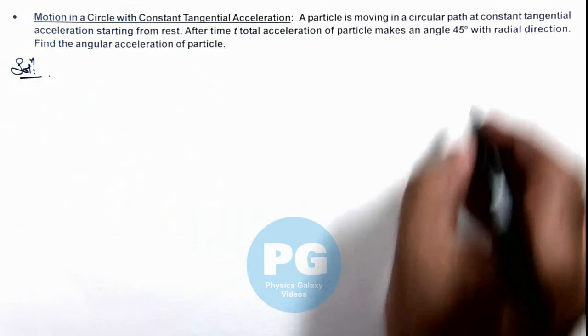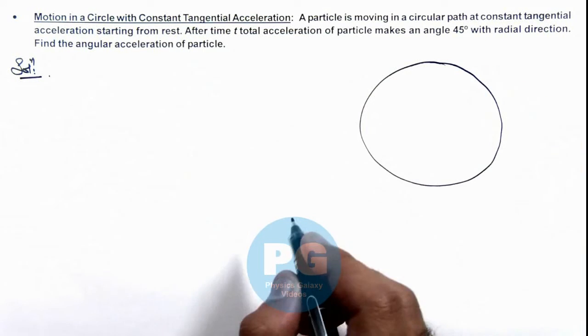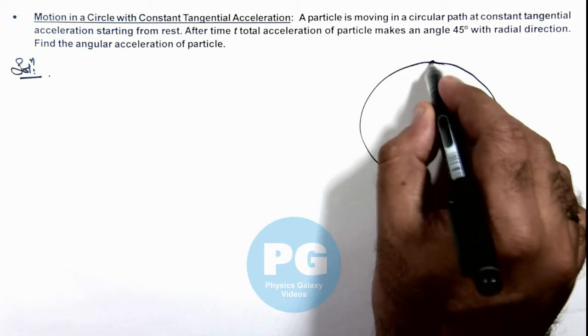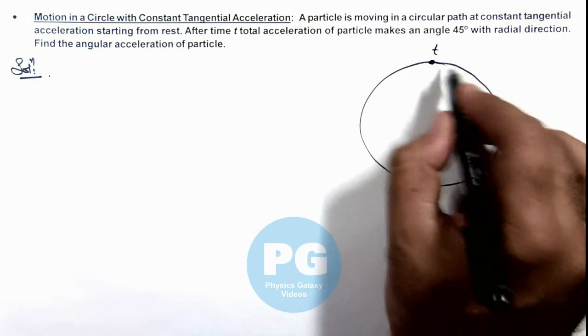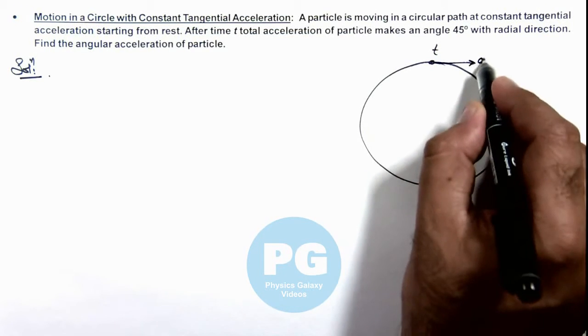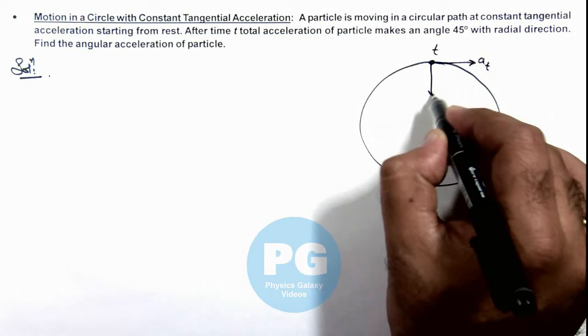If a particle is moving in a circular path, at a general time t, its tangential acceleration is here and normal acceleration is here.